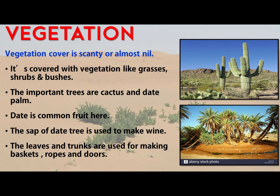The main plants that grow here are cactus and date palm tree. The common fruit here is the date palm. The date palm tree is used for many purposes: the sap of the date tree is used for making wine, and the leaves and trunks are used for making baskets, ropes, and doors.